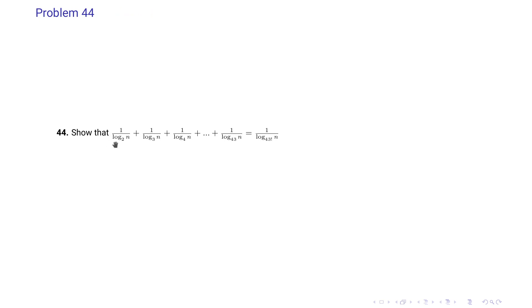Problem 44 says: show that log n base 2 plus log n base 3 plus log n base 4 up to log n base 43 equals 1/(log n base 43 factorial). We have already solved a similar question to reinforce the concept — in that problem the maximum base was 1988, and the right hand side had base 1988 factorial.